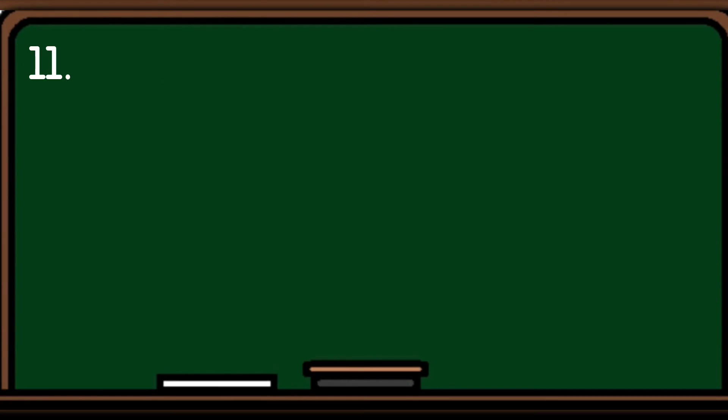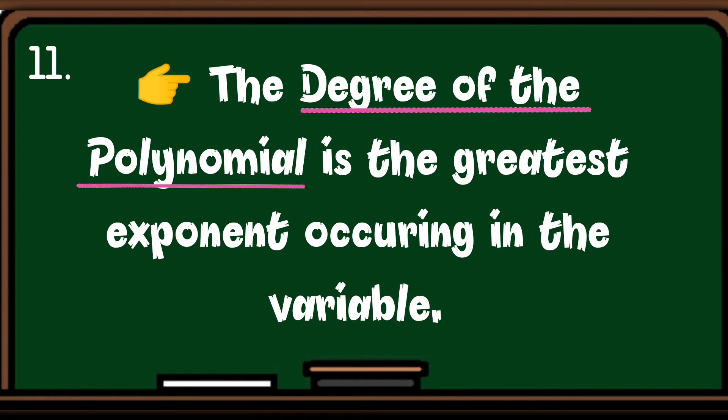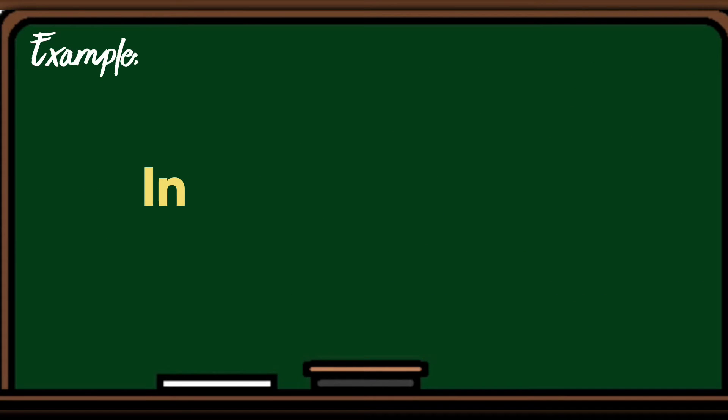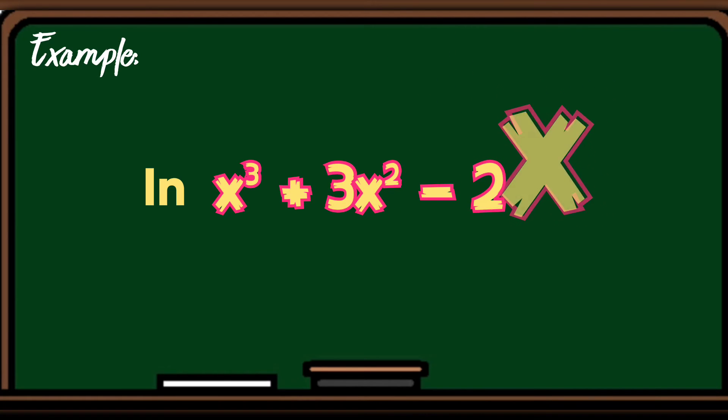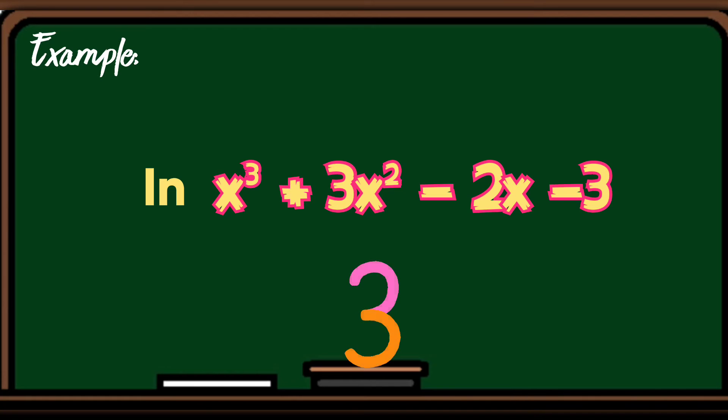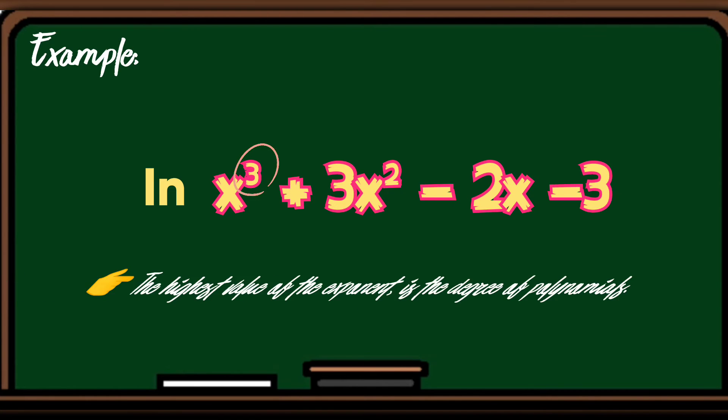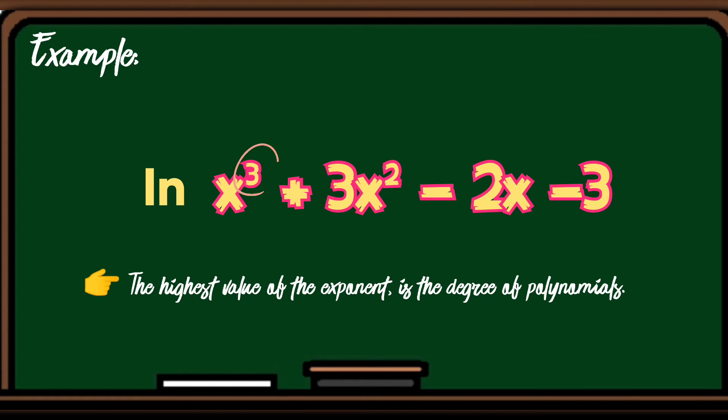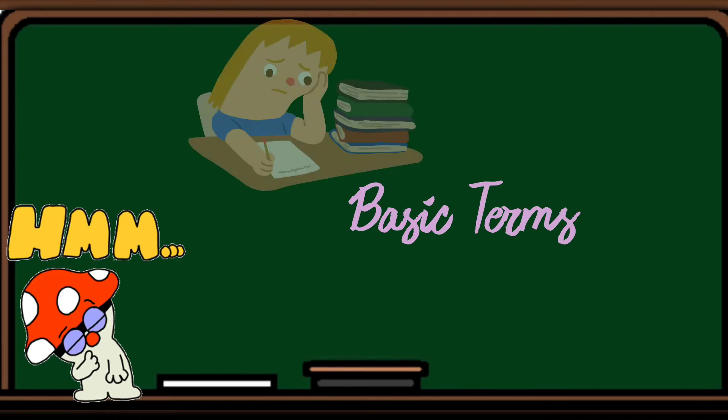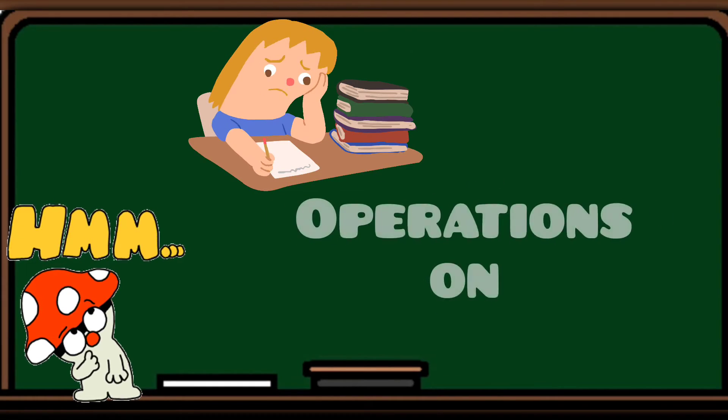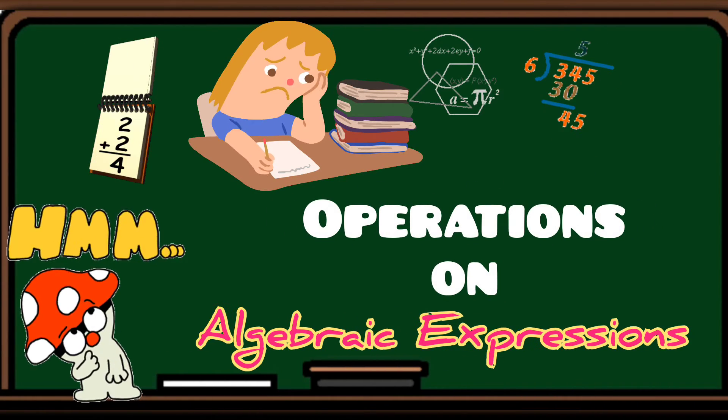Number eleven, the degree of the polynomial is the greatest exponent occurring in the variable. Example, in x cubed plus 3x squared minus 2x minus 3, the degree of the given polynomial is 3. Kaya 3, ang sinasabi dyan, kaya degree of the polynomial, yung pinakamataas ang value ng exponent. So, yun na lahat ang basic terms na kailangan natin maunawaan para tayo makapag-proceed sa operations on algebraic expressions.